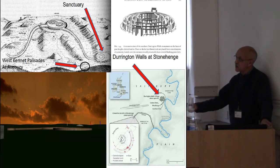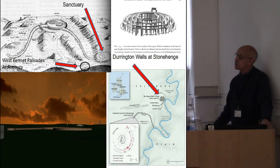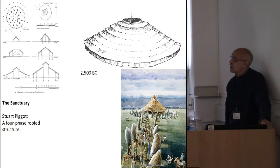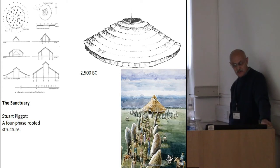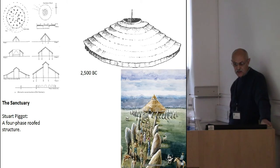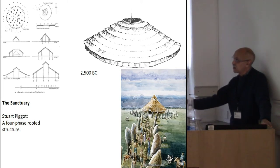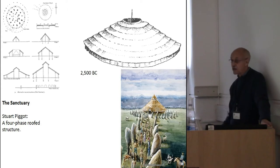Here's a computer visualisation of the West Kennet Palisades. You can see the chalk terrace top of Silbury Hill peeping over the edge of the near horizon just there. Let's look at the model that first of all predicts it was a timber structure or four-phase roofed structure, and here we see how it may have looked — this is an English Heritage visualisation of the sanctuary according to this approach.